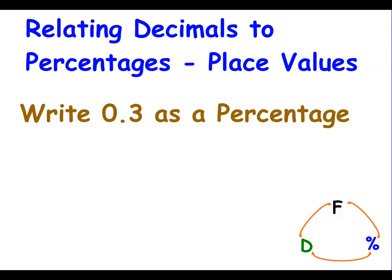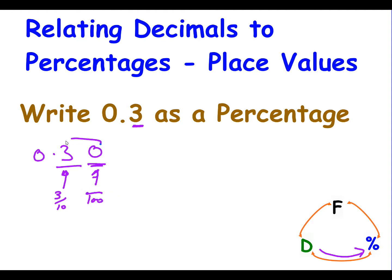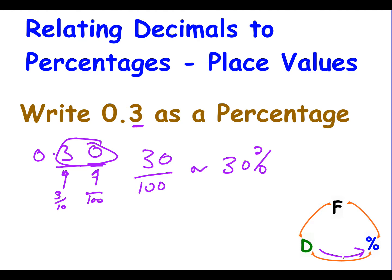Now let's look at relating decimals to percentages. The decimal 0.3 means we have 3 tenths. But if I put a zero after it, I can make it hundredths — so it becomes 30 hundredths or 30%. To turn a decimal into a percentage, we multiply by 100. So for 0.3, move the decimal point two places to the right, fill any empty places with a zero, and that gives us 30%.